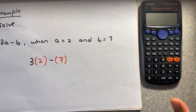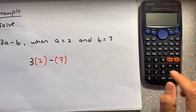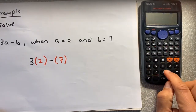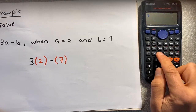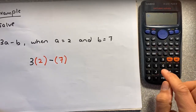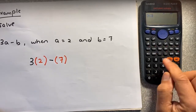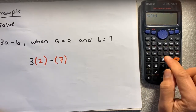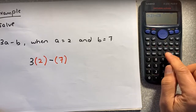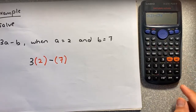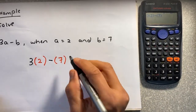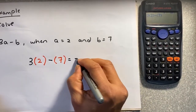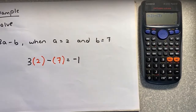The last step: put it in your calculator. On your calculator, you put 3, bracket, 2, close bracket, minus bracket, 7, close bracket. Put the equal sign, and the answer is negative 1.